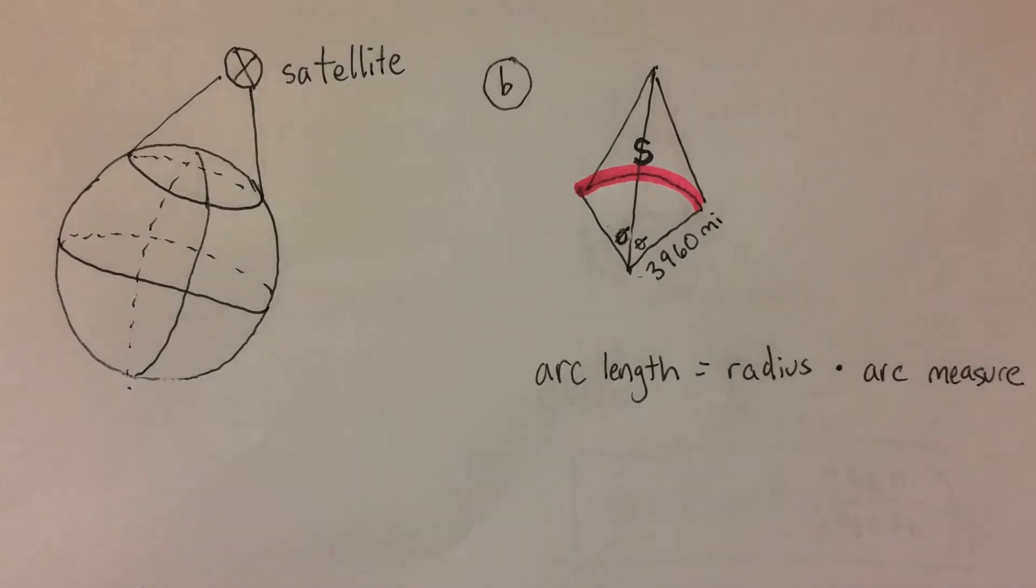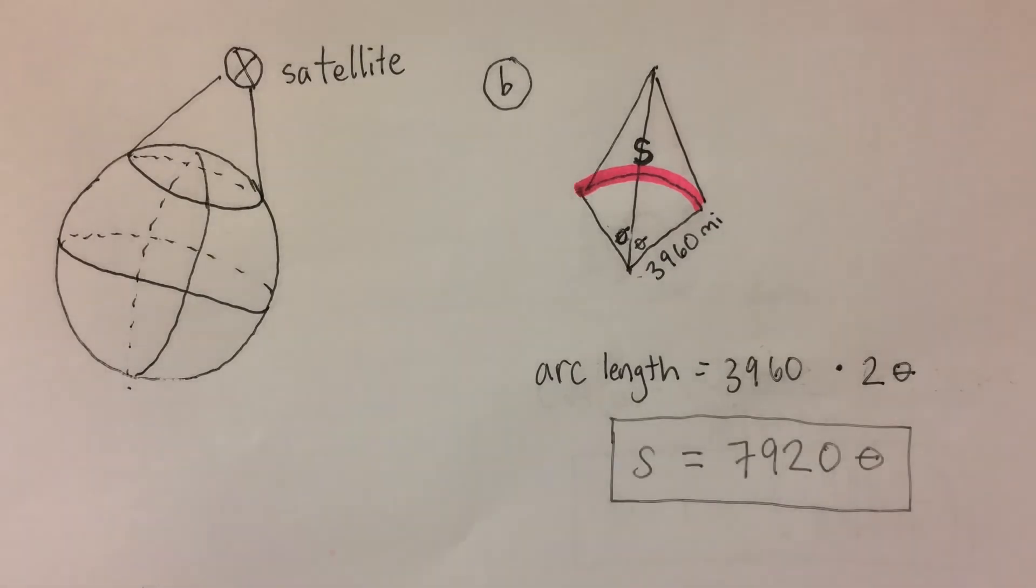The radius in this case is 3,960 miles, and the arc measure, as I said before, is 2 theta. Multiplying the two constants together, 3,960 times 2, yields 7,920. Now we have a function for s in terms of theta.